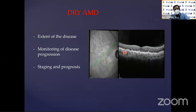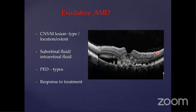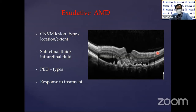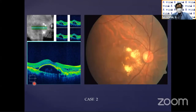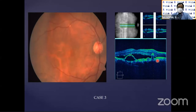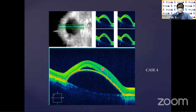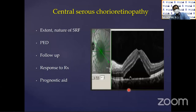In dry AMD, there will be drusenoid deposits with retinal pigment epithelial waviness. Whenever there is exudative retinal detachment, we start seeing fluid — be it subretinal, intraretinal, or pigment epithelial detachment. Type 1 and type 2 choroidal neovascular membranes present differently: in type 2 you see hyperreflective deposits, and in type 1 you see pigment epithelial detachment, including large pigment epithelial detachment with sub-RPE and sub-retinal fluid.